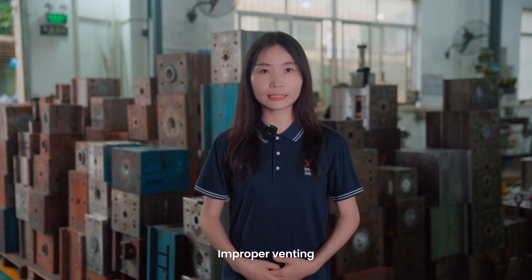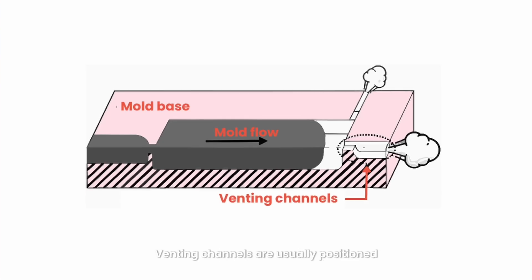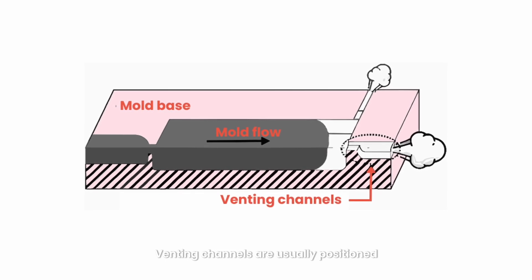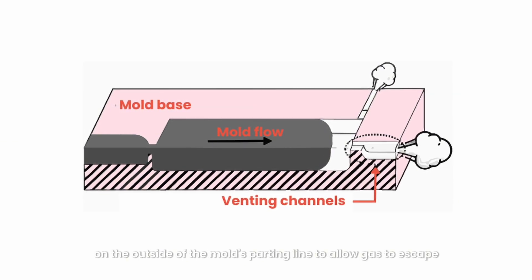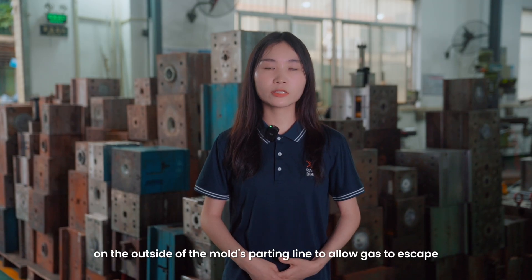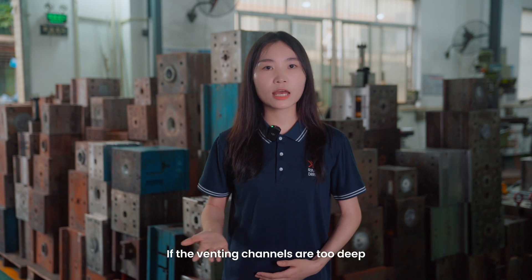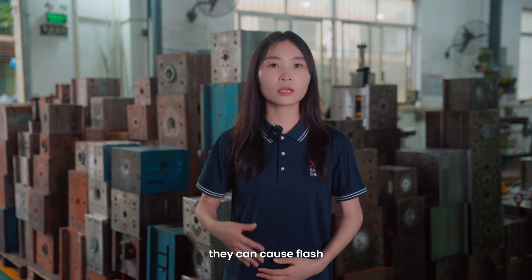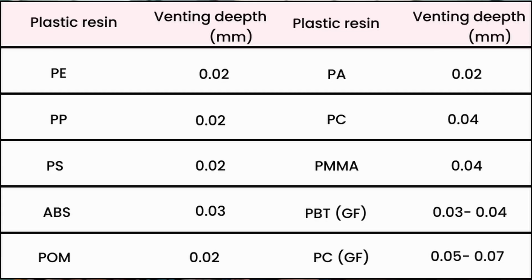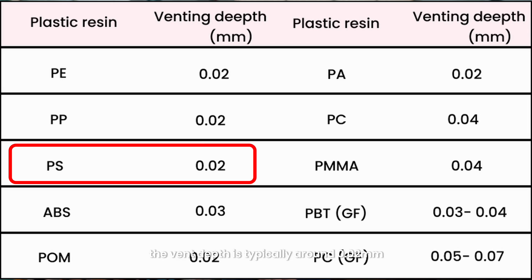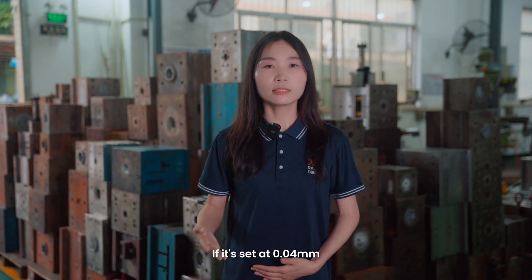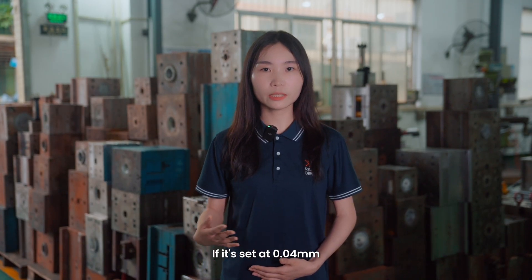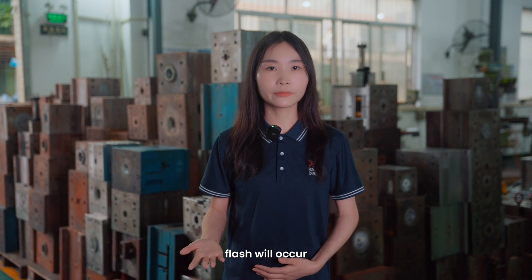Third, improper venting. Venting channels are usually positioned on the outside of the molding parting line to allow gas to escape. If the venting channels are too deep, they can cause flash. For example, with PS plastic, the vent depth is typically around 0.02 mm. If it's set to 0.04 mm, flash will occur.